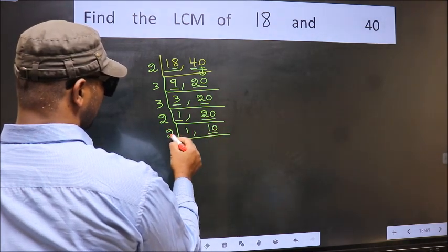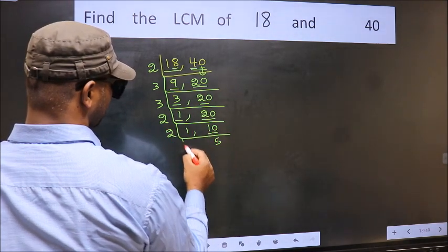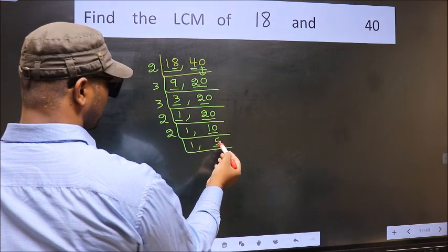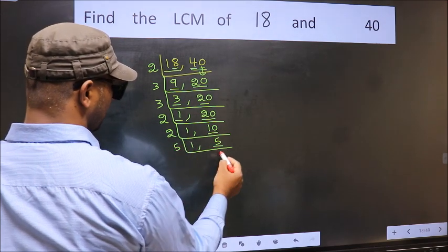Now 10 is 2 fives 10. Now we have 5. 5 is a prime number, so 5 ones 5.